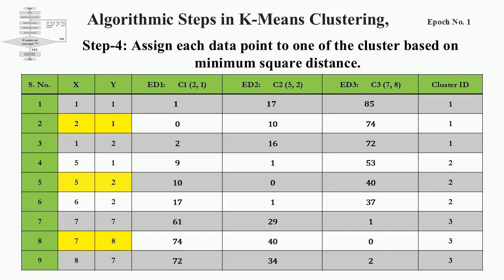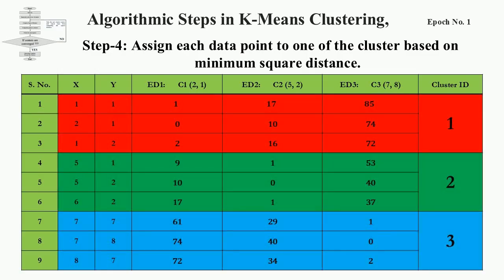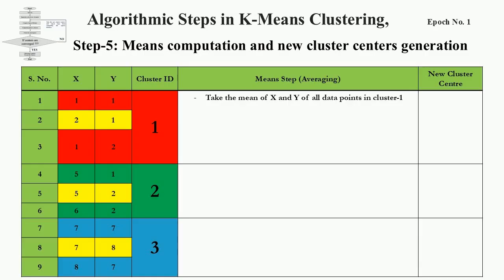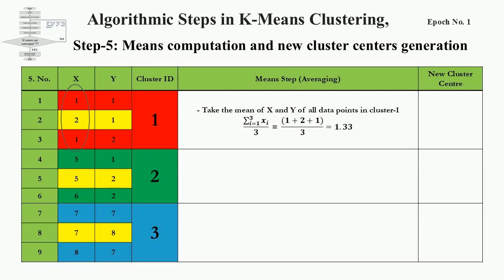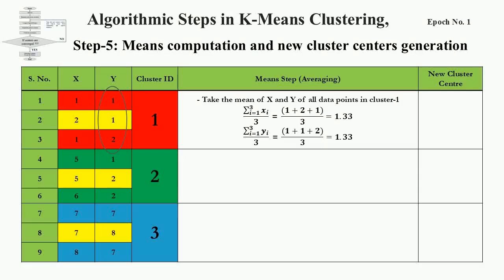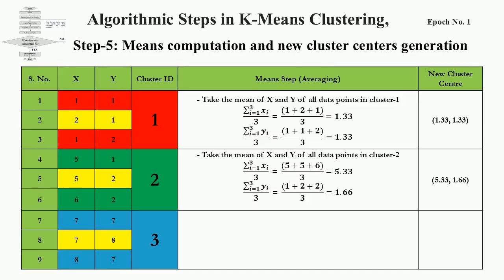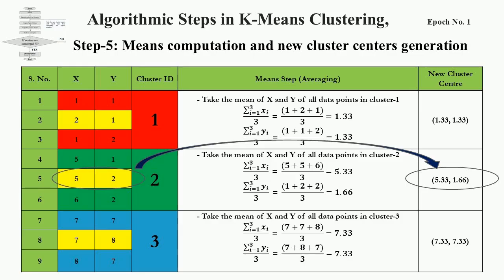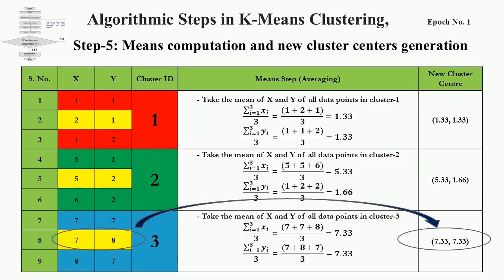Here is the complete picture of each data point with their respective assigned clusters, color-coded as red, green, and blue. Please note that (2,1) is C1, (5,2) is C2, and (7,8) is C3 as initial cluster centers. Now move to step 5, the crucial step — the mean or averaging step. Take the mean of the X and Y coordinates of each data point in cluster 1, 2, and 3, and put the means in the new cluster centers column. The cluster 1 center has changed from (2,1) to (1.33,1.33), cluster 2 from (5,2) to (5.33,1.66), and cluster 3 from (7,8) to (7.33,7.33).